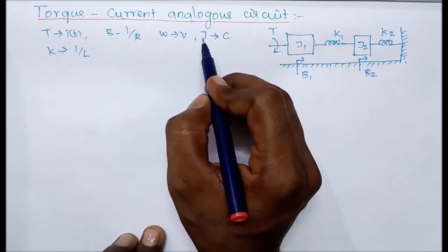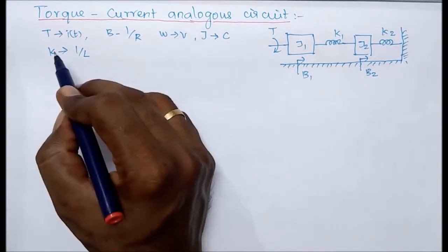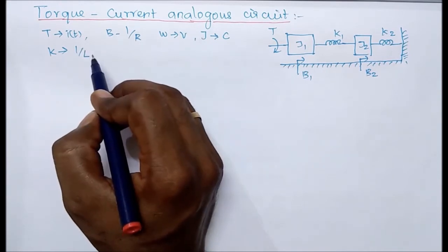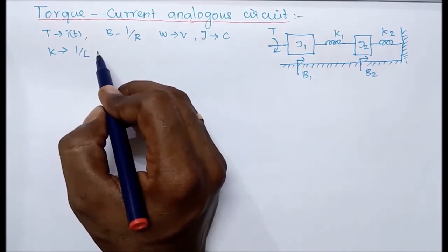For moment of inertia, we have to use a capacitor. For spring, we have to use one-over-inductor in the electrical system.